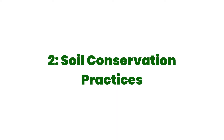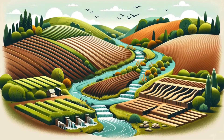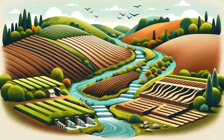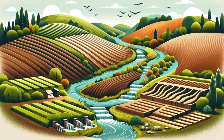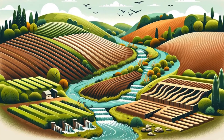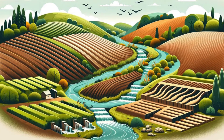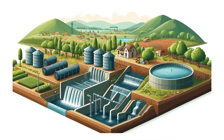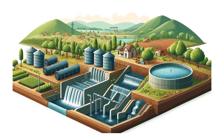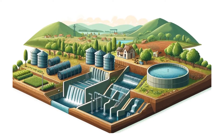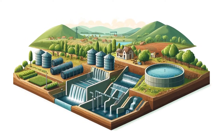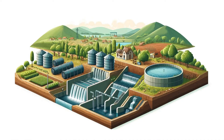Soil conservation practices — techniques like contour plowing, terracing, and building check dams help prevent soil erosion and manage water runoff. Water harvesting — structures like rainwater harvesting systems, percolation tanks, and check dams store rainwater, recharge groundwater, and ensure water availability during dry periods.